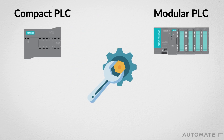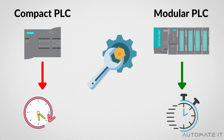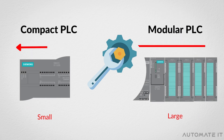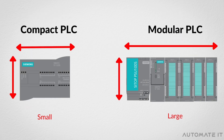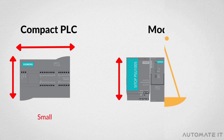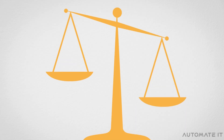Compared to compact PLCs, modular ones are easier to maintain, saving a lot of time on repairs. In terms of size, a modular PLC is larger than a compact PLC since it can connect many modules in one rack.